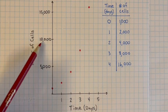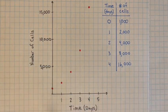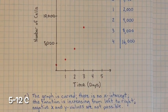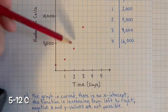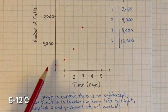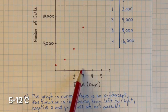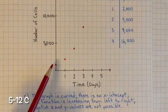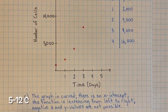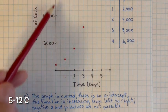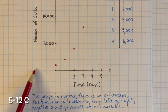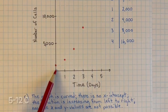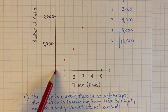Time will always be on the x-axis because time does not depend on anything — everything else depends on time. So the number of cells depends on how many days they've been growing. For part C, we need to give a complete description of the graph. The graph is curved because it's growing exponentially. There is no x-intercept because the bacteria is not dying — it's growing. The function is increasing from left to right, and negative x and y values are not possible, so we have a one-quadrant graph in quadrant one. You can't have negative time or a negative number of cells — you start at day zero and it's only increasing.